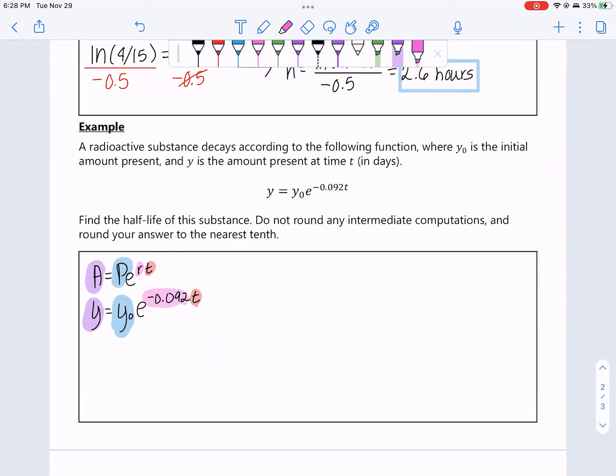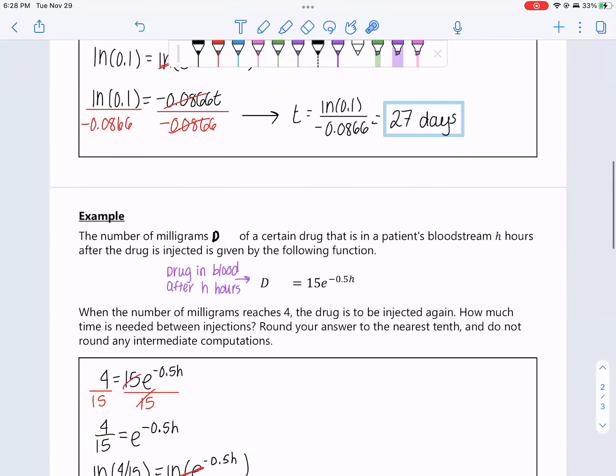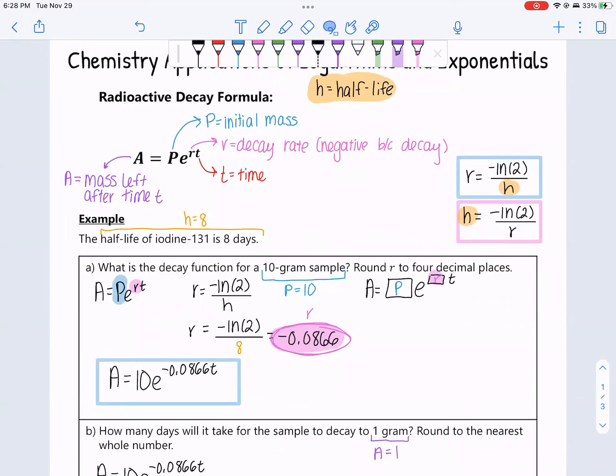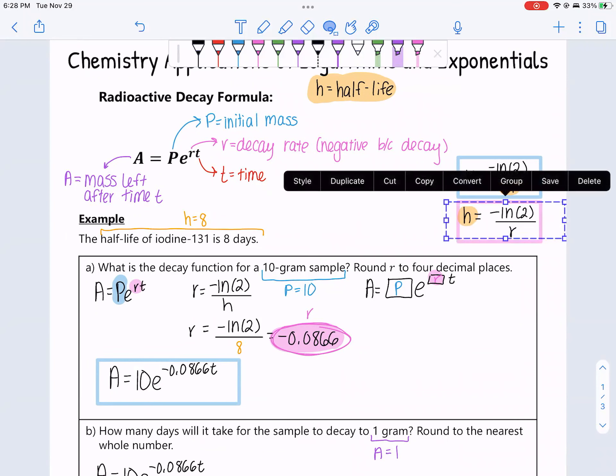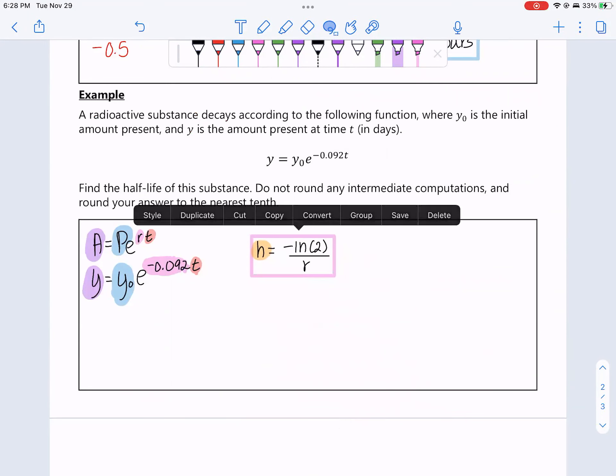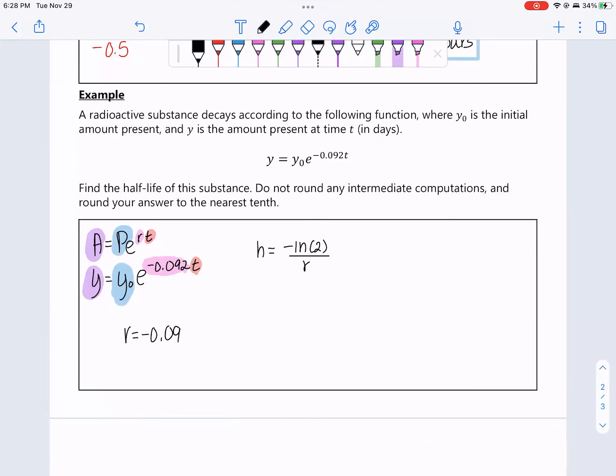The question we've been asked is to find the half-life of this substance. If only there were a formula that related rate to half-life. Oh man, how convenient it would be to have such a formula. Bam. Right there. We have an R. That's all we need to find half-life. So our R value is negative 0.092. We just grab it right out of this formula here. And we plug it into our half-life formula. So negative ln(2) all over R, which is negative 0.092. Plugging this in, negative ln(2) divided by negative 0.092. You get, rounded to the nearest tenth, 7.5 days.